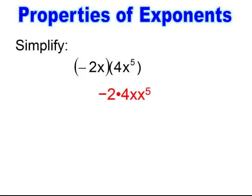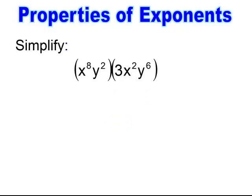You should have gotten negative 2 times 4, and then x times x to the 5th, which gives us negative 8 x to the 6th. And in this case, we get 3x to the 10th, y to the 8th. It's very important that you put the number in front — it's a coefficient.